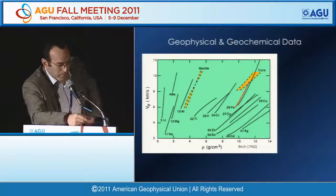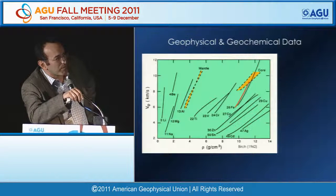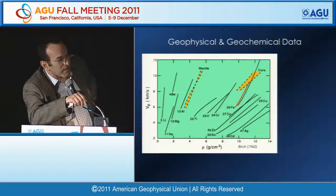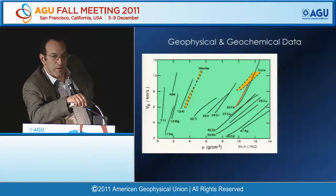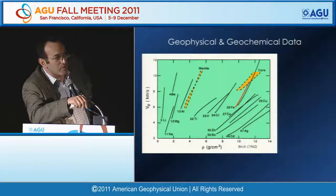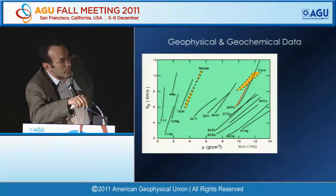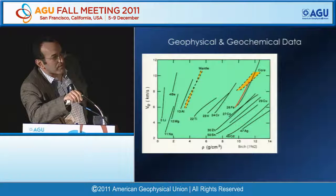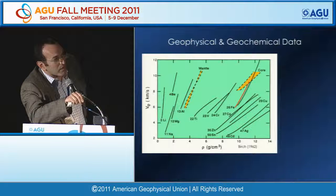Before getting into experiments and simulations, here are strong constraints about what we can say about the core. The core is inaccessible—we can't directly sample it—but we have strong geophysical and geochemical constraints. The geophysical constraint is 50-year-old groundbreaking work by Francis Birch, who analyzed phase velocity versus density systematics of various materials including iron, comparing them to seismological data for the core, showing the core is lighter than pure iron. Hence, since then it has been known the core must contain light elements.